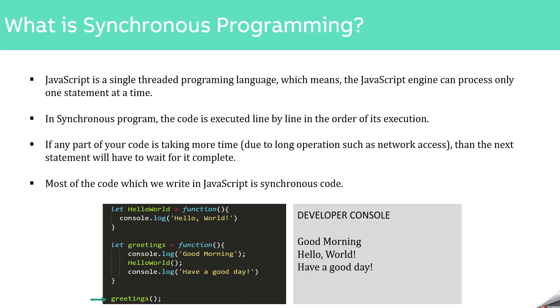So in this example, we saw that the code is executed line by line in the order of its execution. So in a synchronous program, the code is executed line by line in the order of its execution.